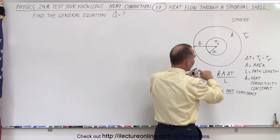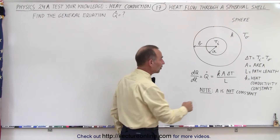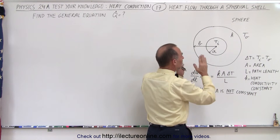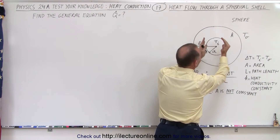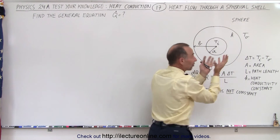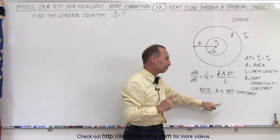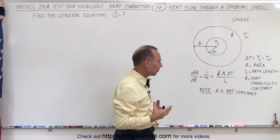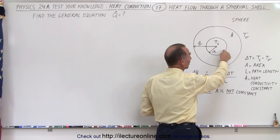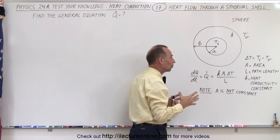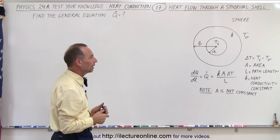The cross-sectional area in the equation — this is the equation of heat flow through heat conduction — is the area through which the heat flows. Since the heat flows from the inside to the outside, the cross-sectional area increases in size; it's not a constant. Therefore we're going to need to integrate. L in the equation represents the distance from A to B, but since A is not a constant, we need to set up a differential equation that we can integrate.